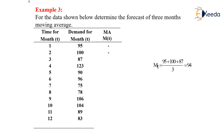Here we will simply have an example: for the data shown, we need to find the forecast using a 3-month moving average. For the entire data which is present for a year, we will find out what is the demand for 3 months in a moving average method.